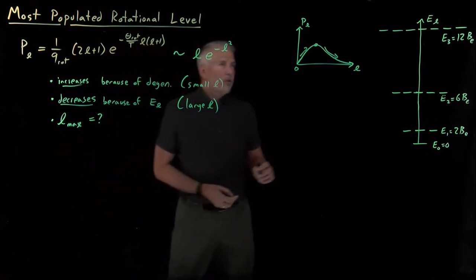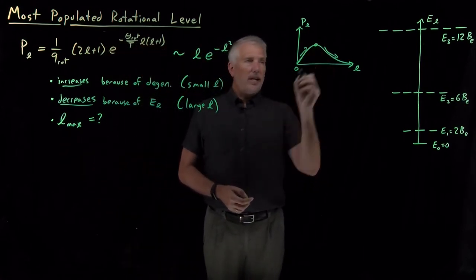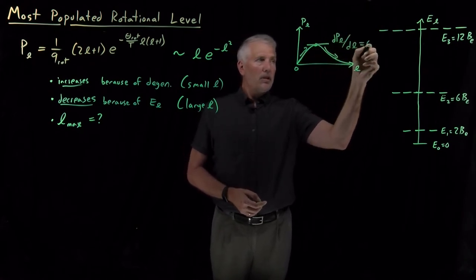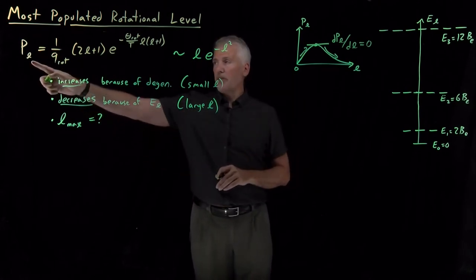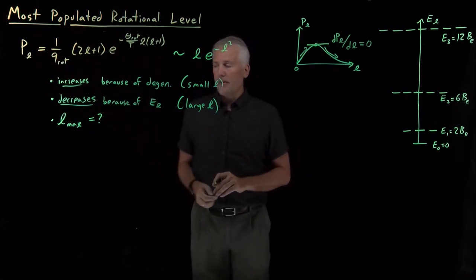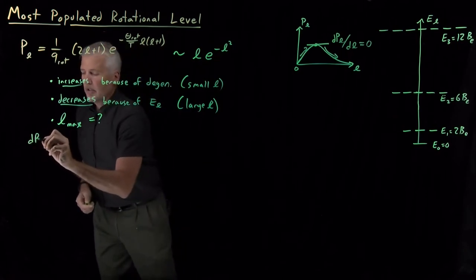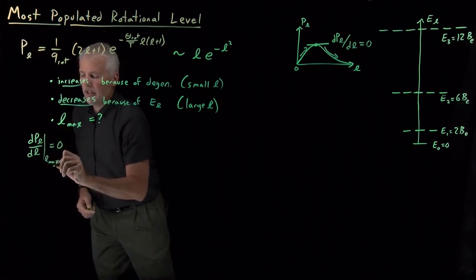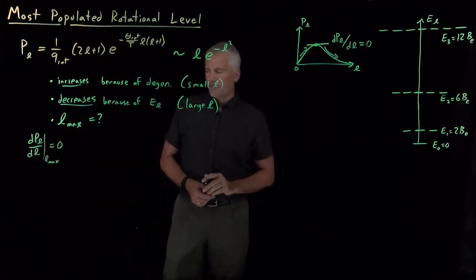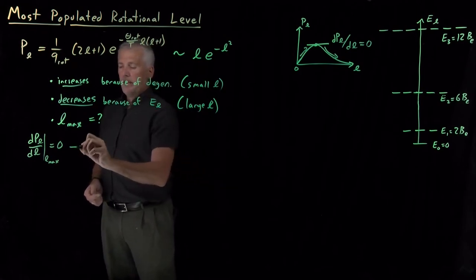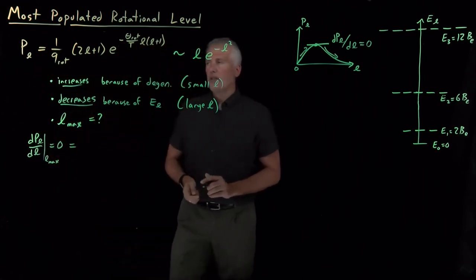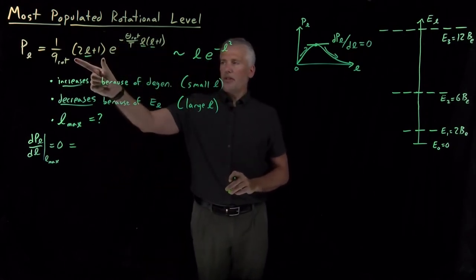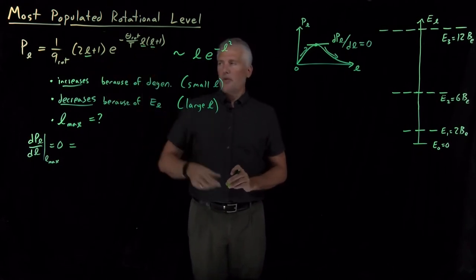The way we find the most populated level is to look for the point on the graph where the slope reaches zero. Since we have an equation for P sub L, we can take its derivative and set it equal to zero. The derivative equals zero at the most populated rotational level, L max. So let's take the derivative of this expression with respect to L. The L shows up both in the prefactor and in the exponent, so we're going to have to use the product rule.